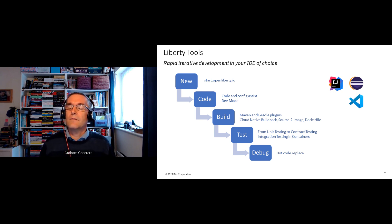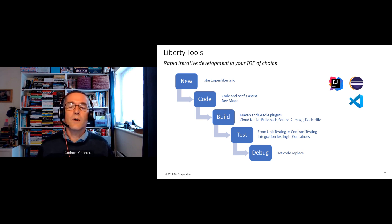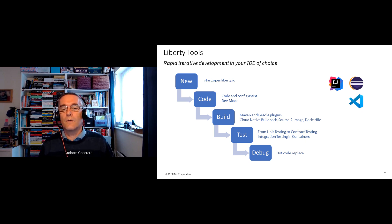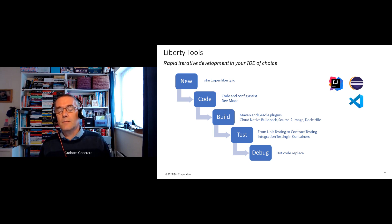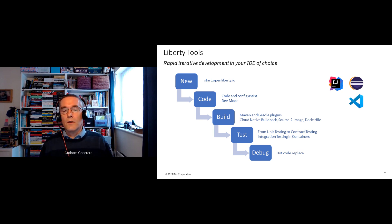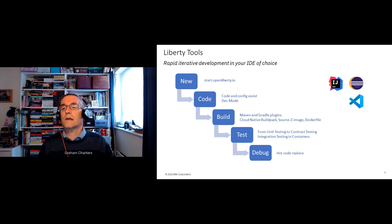If you're moving to cloud environments and containers, you need to be able to build containers, and we support all leading approaches: Cloud Native Build Pack, Source to Image for OpenShift environments, or Dockerfile/container file using OCI terminology. For testing, we enable a variety of capabilities from unit testing to integration testing. We also provide support for testing in containers through Testcontainers, contract testing with PACT for microservice APIs, and hot code replace for debugging.